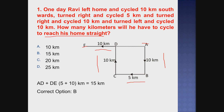We can see directly that D to E is 10 km. A to D - we can find indirectly. BC is 5 km, so obviously A to D is also 5 km, because BC is parallel to AD. So since both are parallel lines and BC is 5 km, AD is obviously also 5 km. That's why the answer is: AD is 5 km, and DE is 10 km. Adding both gives us 15 km. That is the correct option B.